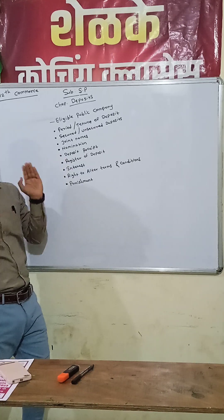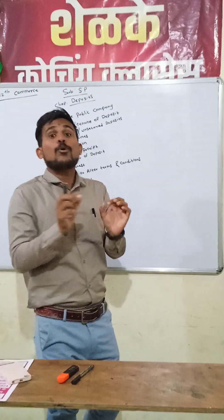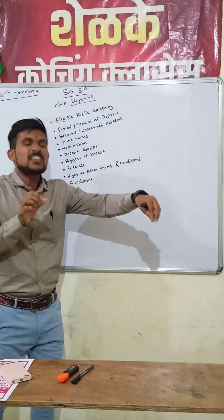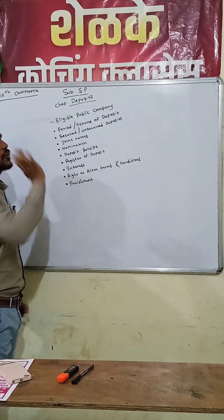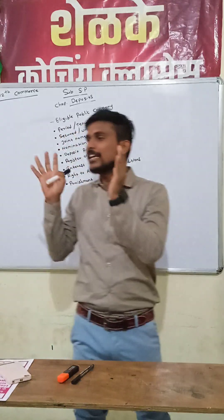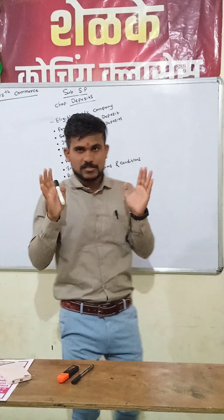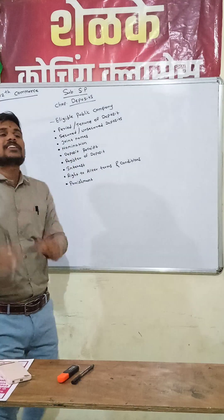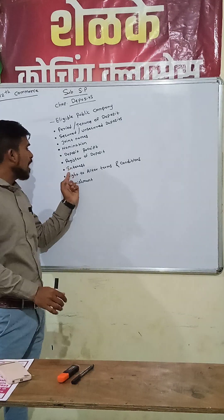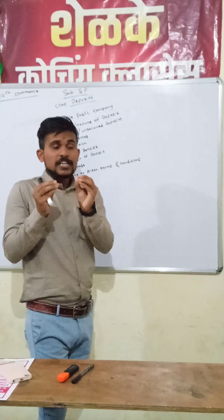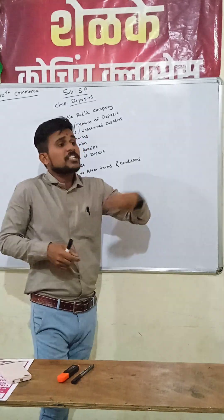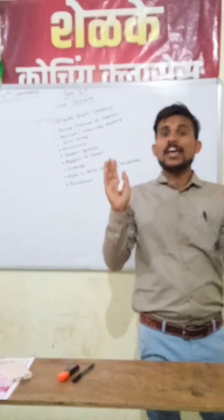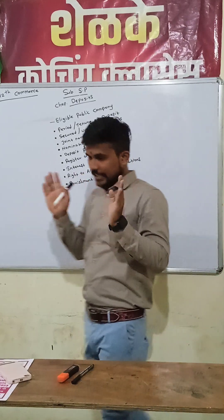After that, deposit receipt — the depositor will receive the deposit receipt within 21 days from depositing money into the company. Next, register of deposits — the company must maintain a register of deposits, which is prepared within 7 days from the acceptance of the deposits. Interest is provided by the company to the depositor as per the rules and regulations of the RBI, that is the Reserve Bank of India.